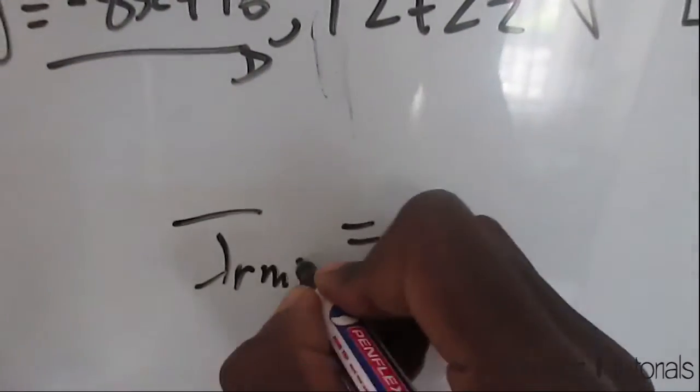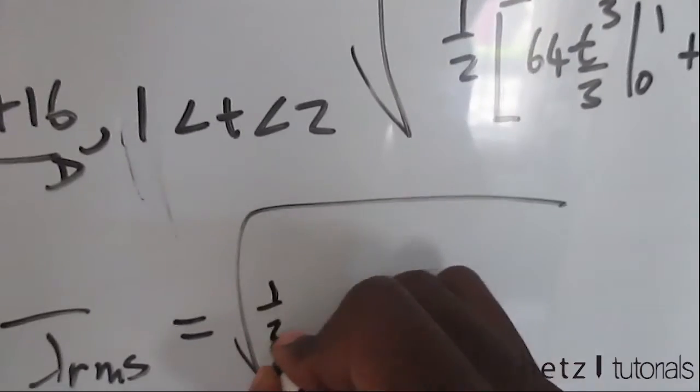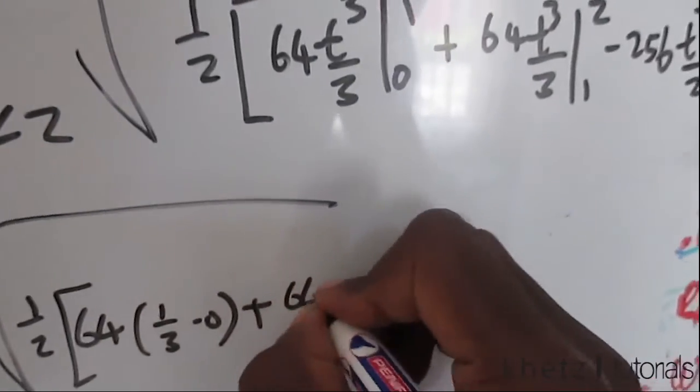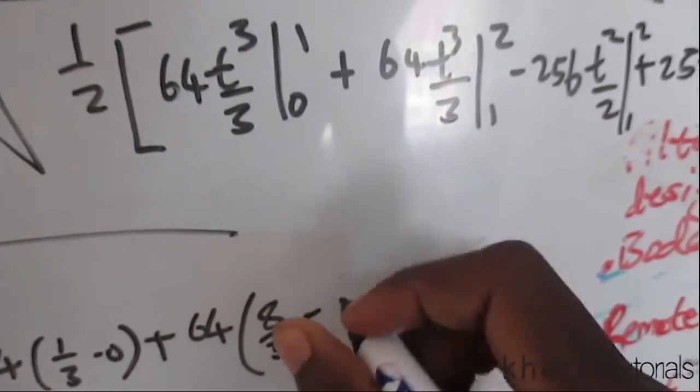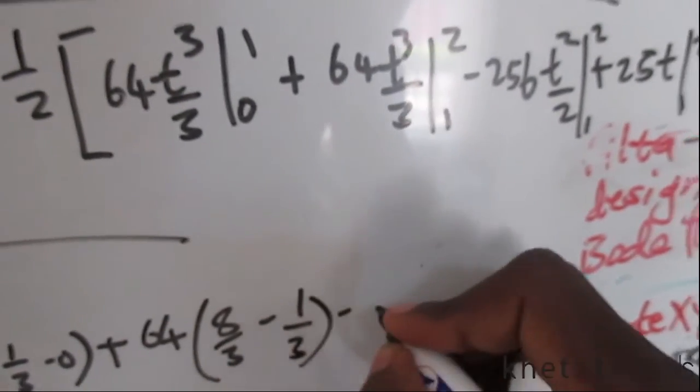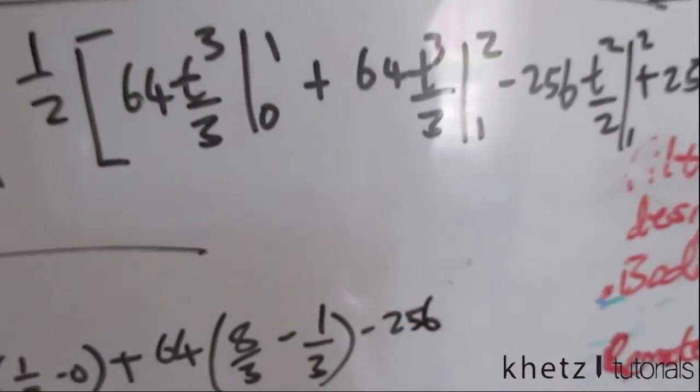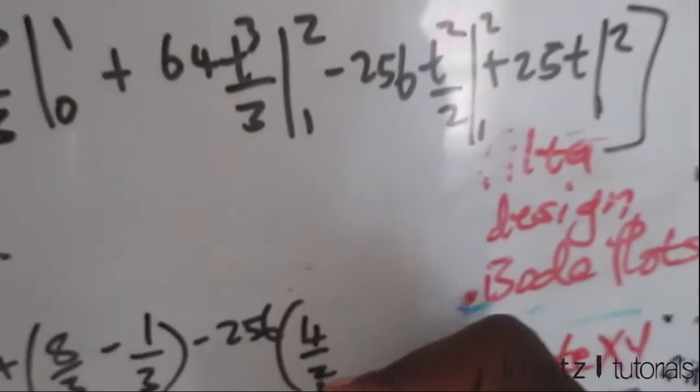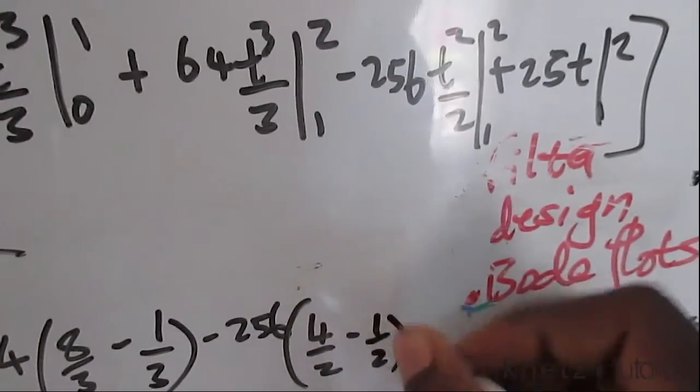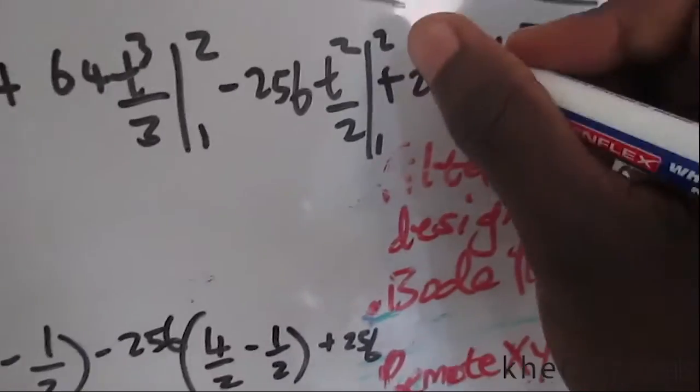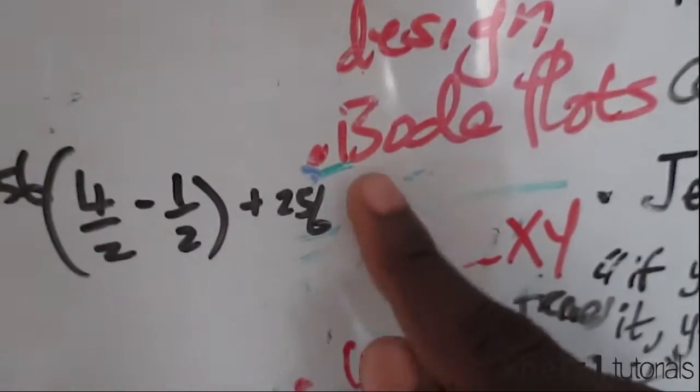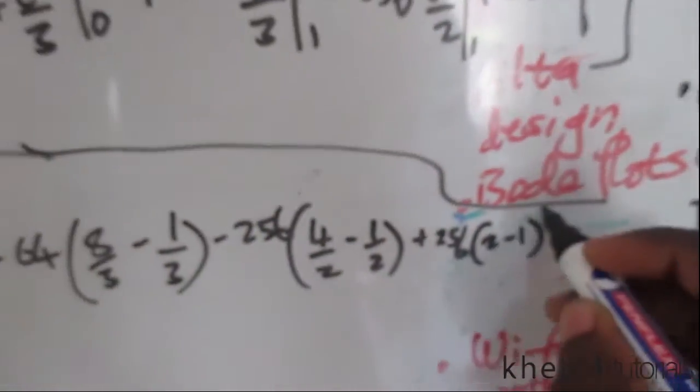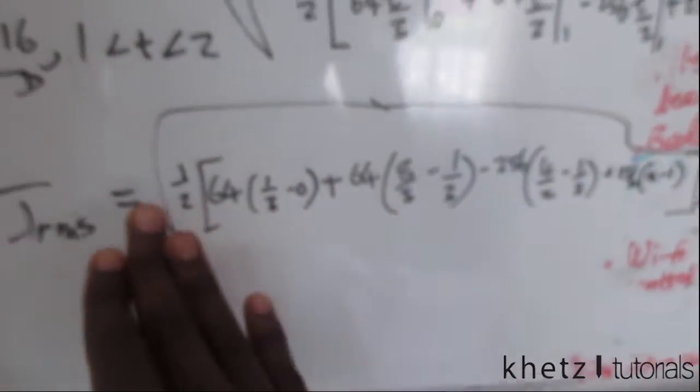Now computing the integrals, you have half of 64. You have 8 over 3 subtract 0, then you have 64. This is 8 over 3 subtract 1 over 3. Then you have negative 256, 4 over 2 from this point. 2 squared is 4, so that's 2 over 2 subtract 1 over 2. Then finally plus 256, this is 256. 2 subtract 1, all of that in this huge square root sign.